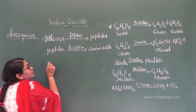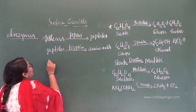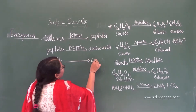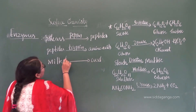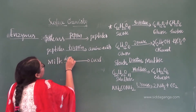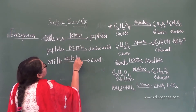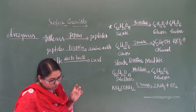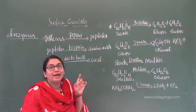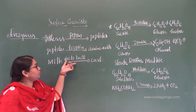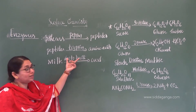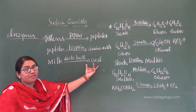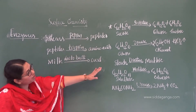Finally, there is an enzyme that converts milk into curd: lactobacillus. Lactobacillus does not have the '-ase' suffix. It is actually a bacterium that acts as an enzyme to curdle milk. These are all examples of biocatalysts that increase or decrease the rate of biochemical reactions in plants and animals.